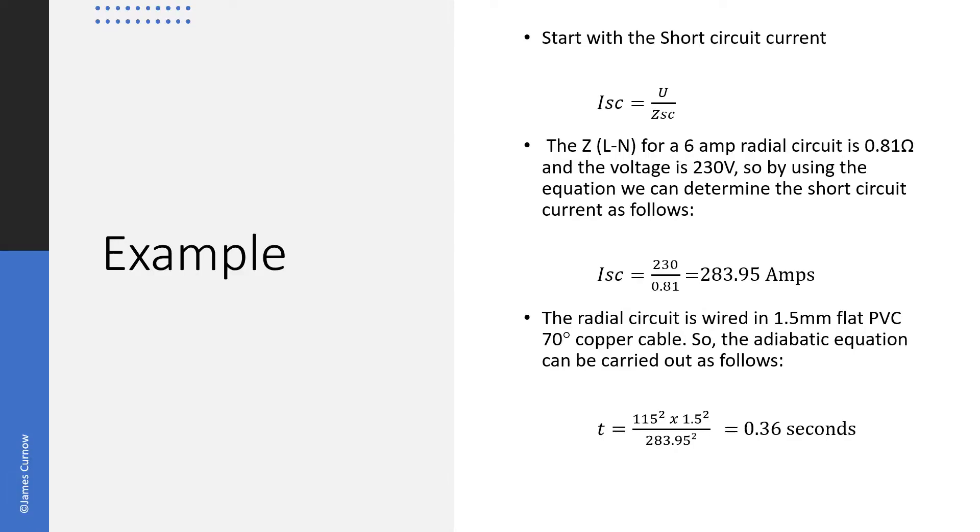Here we have an example and what I always do is start with the short circuit current which can be calculated by dividing the voltage by the Zsc. If the ZL to N for a 6 amp radial circuit is 0.81 ohms and the voltage is 230 volts, we can determine the short circuit current: 230 volts divided by 0.81 which gives us 283.95 amps.